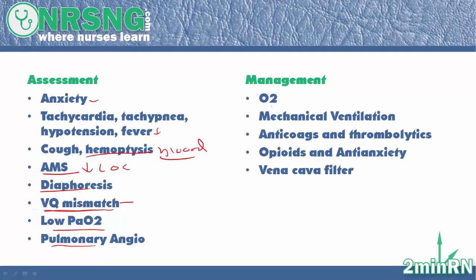Pulmonary angio is going to actually possibly show us the clot. For management, we need to get them oxygen — provide supplemental oxygen and be prepared for mechanical ventilation if we're unable to get their PaO2 where we need it to be. We're going to offer them anti-coags to try to decrease the coagulation of their blood, and we're probably also going to have to throw thrombolytics at them — possibly some TPA or something like that — to break up that clot and get blood flowing how it needs to. We're going to give them opioids to treat their pain, and we need to give them anxiolytics to help calm them.